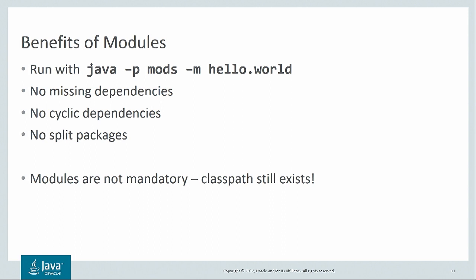By the way, modules are not mandatory. You can keep putting jars on the class path, and JDK 9 supports a gradual migration to modules so that you can choose the trade-off of how much work you're willing to do to modularize versus the benefits of modules.